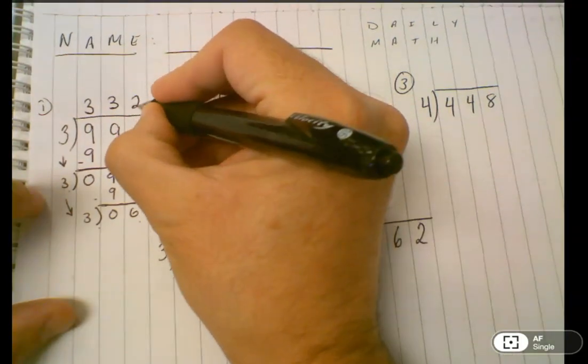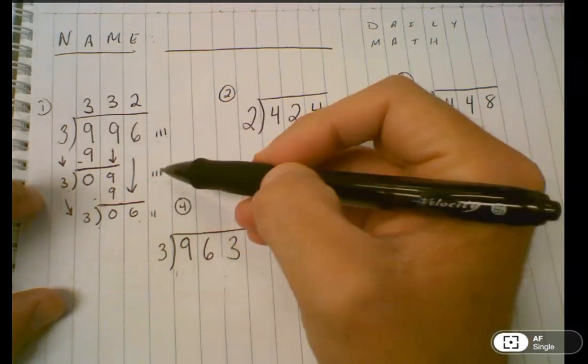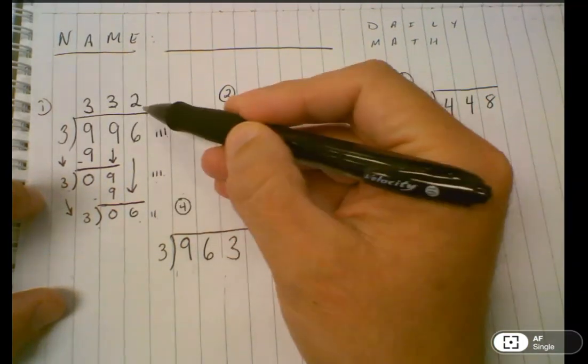So you can see how I'm building my quotient, the answer to my division problem. The first three went into the hundreds. The second three tally marks went into the tens. And the two went into the ones.